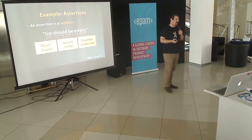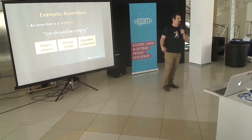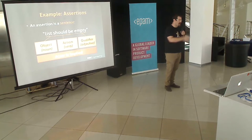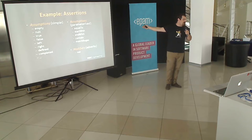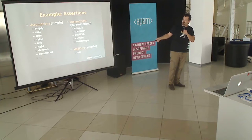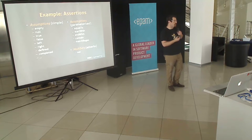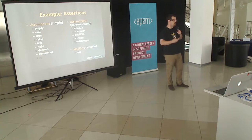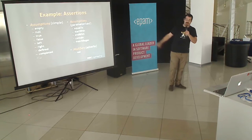An assertion is a sentence. Take 'list should be empty' — this is English. Ideally, I would want my Scala code to look like a well-understood human language. List is the object I'm trying to assert on — that's a noun. 'Should be' is the action — the verb. And 'empty' is the qualifier, the description of what I'm trying to achieve — that is an adjective. We might have a whole bunch of assumptions for our data validation language: emptiness for a collection, nullability, true/false for Booleans, left/right for Eithers, defined/completed for futures, and parameterized assumptions like 'starts with,' 'ends with,' or 'matches regular expression.'